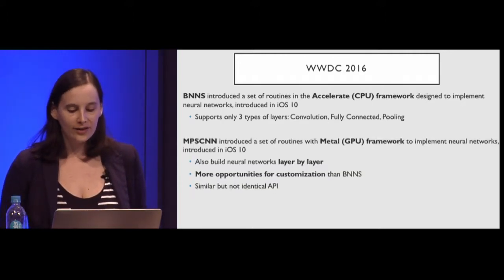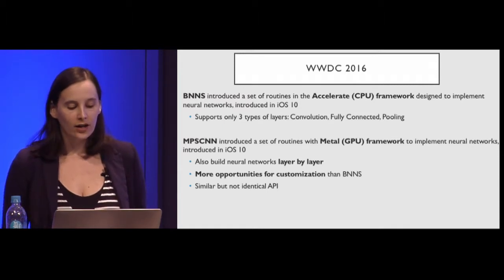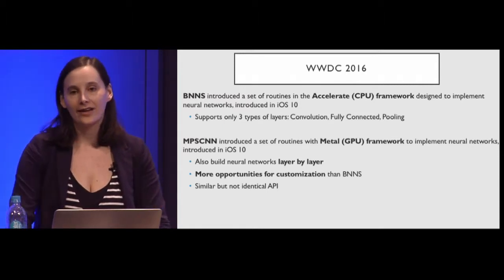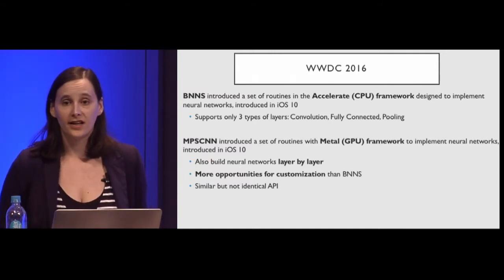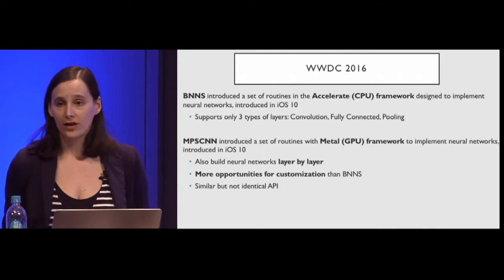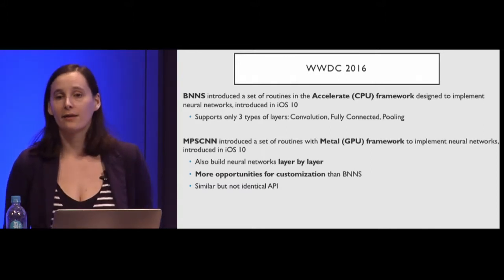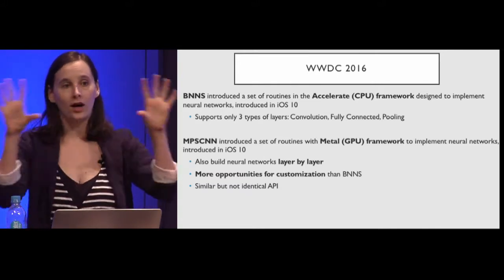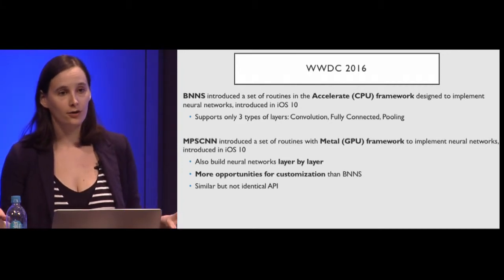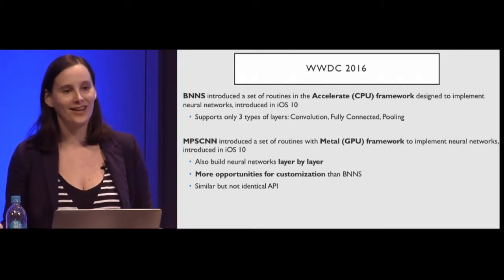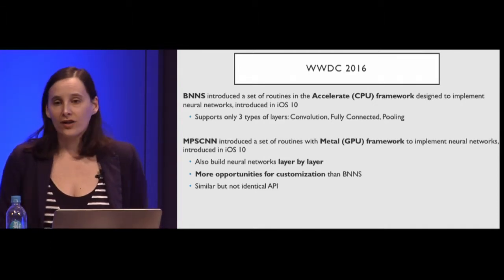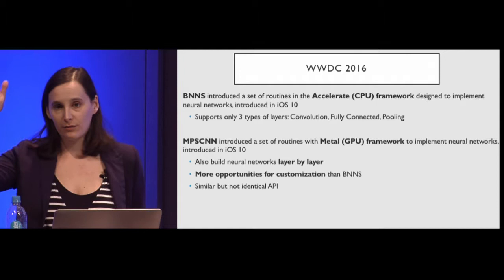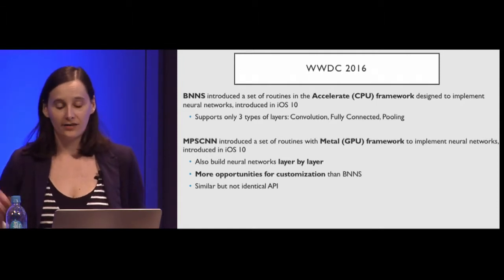There was also the Metal equivalent introduced in the same iOS 10 rollout. You could build neural networks, but you had to build them layer by layer. This was already different from how data scientists tend to do it — training frameworks like Keras make it easy to build a whole neural network with a few lines of code. In contrast, on iOS you had to build it one component at a time.